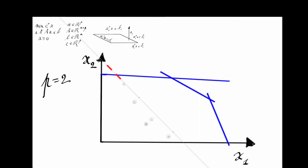Now let's look at the objective function C transpose X. Let's draw all values of x1 and x2 such that C transpose X is equal to some given value, let's say 2. This is a line, represented in dashed red on this picture. These are all the points such that the objective value is equal to 2. Not all these points are feasible — only the points at the intersection of the polyhedron and this line are feasible solutions with value 2.